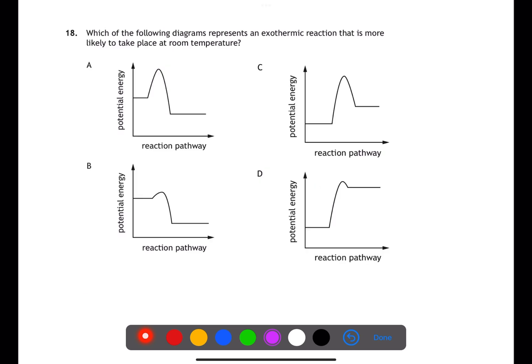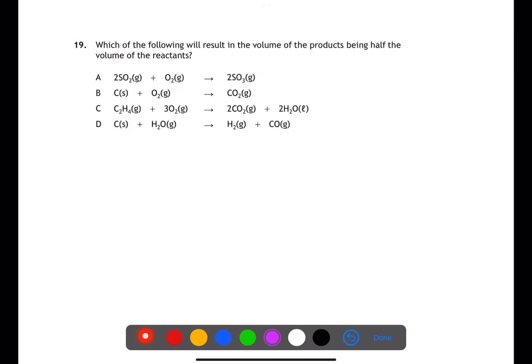Question eighteen looks at energy diagrams. We're looking for an exothermic reaction, which gives out heat, meaning the energy of the products must be lower than the reactants — eliminating c and d. For something to take place at room temperature it needs a low activation energy, making b the answer.